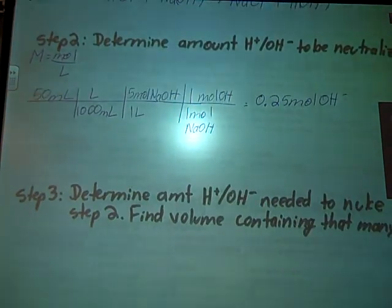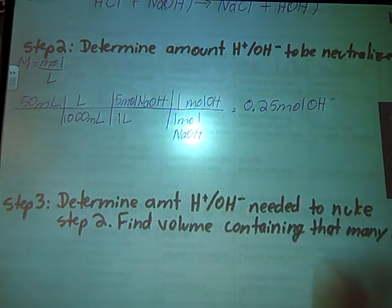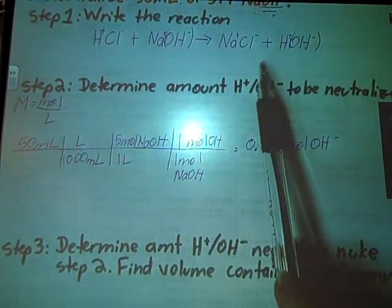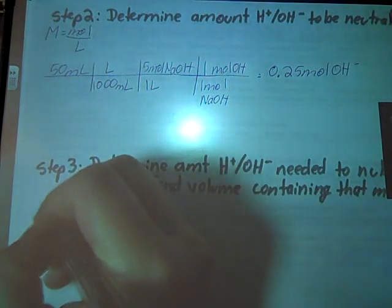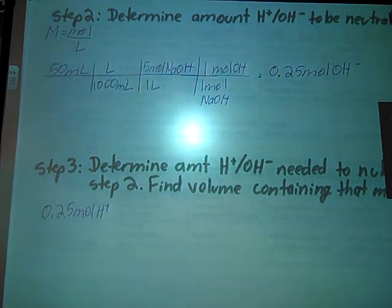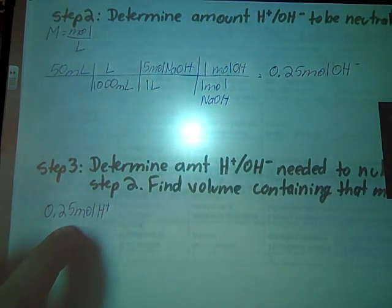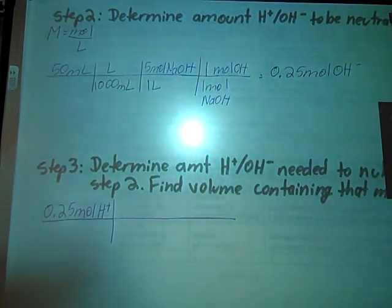Step 3 says to determine the amount of OH or H plus needed to nuke step 2. If we look at our water up here, notice that one H plus needs one OH minus. So if I have 0.25 moles of OH minus, I'm going to need 0.25 moles of H plus. Now, the trick becomes, I need to get from moles of H plus to the volume of my HCl solution. How much of that HCl solution do I need to take out of the bottle in order to have this much H plus floating around?